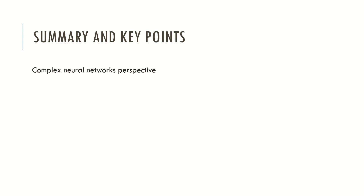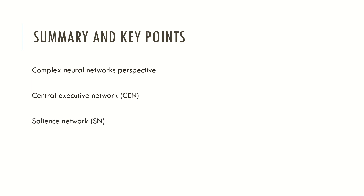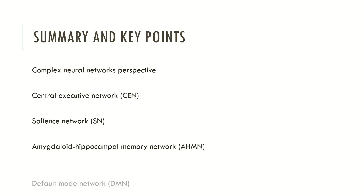We saw that there are different computational networks. One typically associated with executive functions is the central executive network. Another network responsible for orienting our attention towards internal or external events is the salience network. There is also a network associated with memory formation, which is the amygdaloid-hippocampal memory network. And finally, we talked about the default mode network, which is thought to be the neural substrate of the self and encompasses several functions, the most salient being self-related cognition.